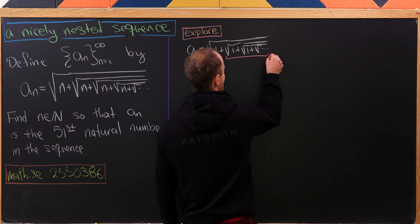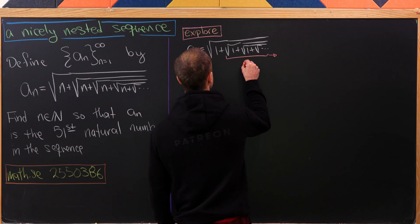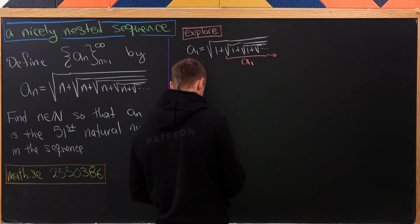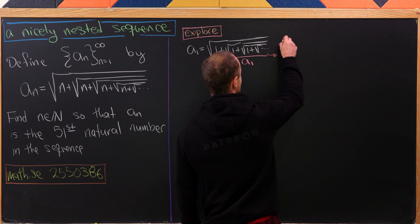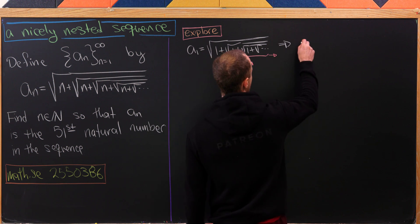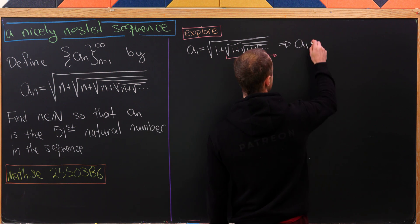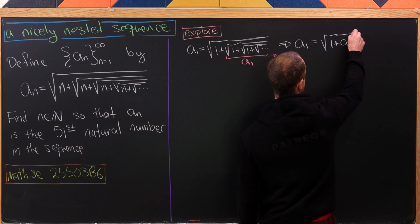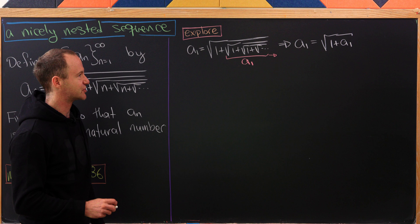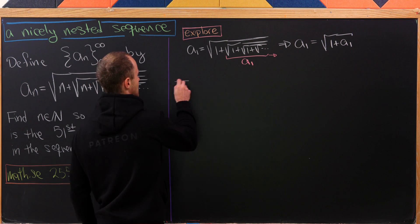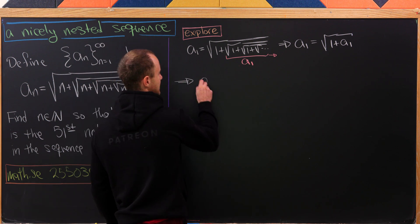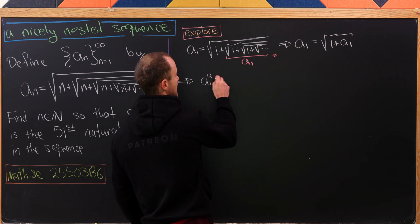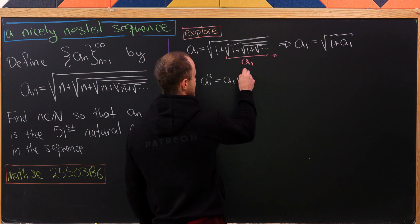If we notice, everything after this point is exactly a_1 again, which gives us this nice equation: a_1 equals the square root of 1 plus a_1. Now we can solve this equation. We'd probably like to square it, leaving us with a_1 squared equals a_1 plus 1.